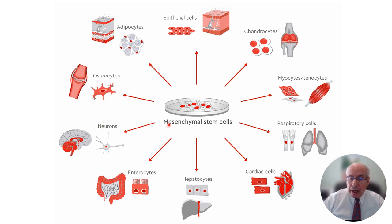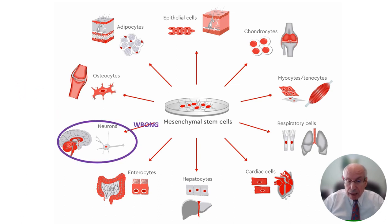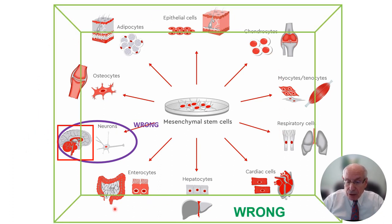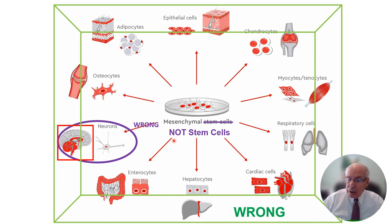If you look online for a diagram of mesenchymal stem cells and all the things they can do, the figure says they can differentiate into osteocytes, fat cells, or chondrocytes, and replace dead cells in these tissues. This turns out not to be correct. You can never get MSCs to naturally differentiate in the body into nerve cells or any of these tissues. This diagram is wrong because MSCs are not stem cells — they can't do this. This is a cell culture artifact.